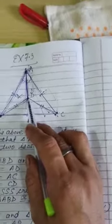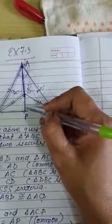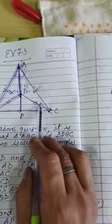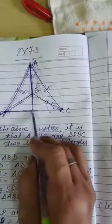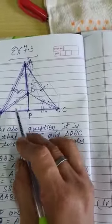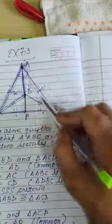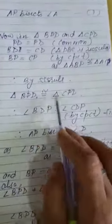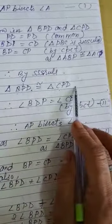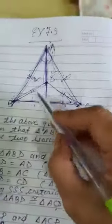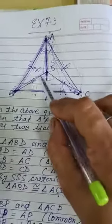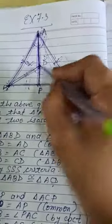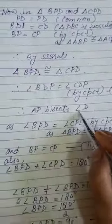Now for the second part of part 3, we consider triangles BPD and CPD. In these two triangles, PD is common, BD equal to DC as these are sides of the isosceles triangle, and BP equal to PC because these are corresponding parts of congruent triangles — as we proved triangle ABP congruent to triangle ACP, so BP equal to PC. With BP equal to CP, BD equal to CD, and PD equal to PD, by SSS rule triangle BPD is congruent to triangle CPD. Therefore angle BDP equal to angle CDP, which means AP bisects angle D also.